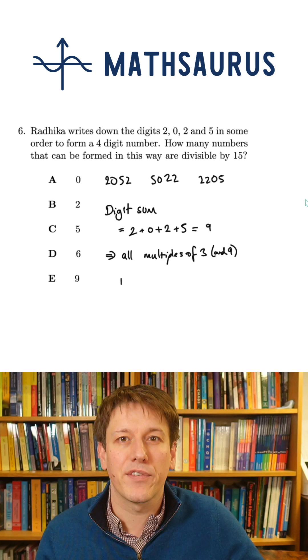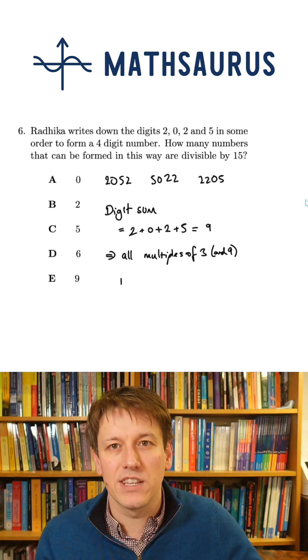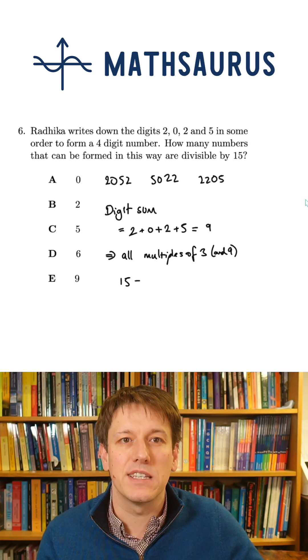If the digit sum is a multiple of 3, the number's a multiple of 3. If it's a multiple of 9, it's a multiple of 9. Really core Maths challenge content for the divisibility test.